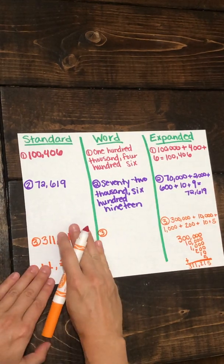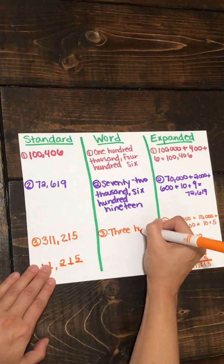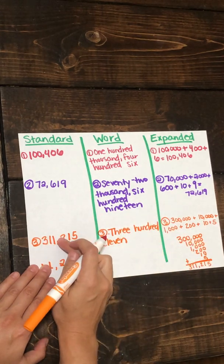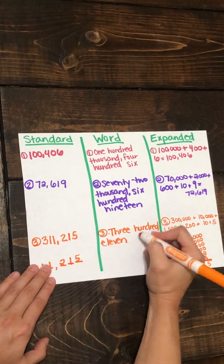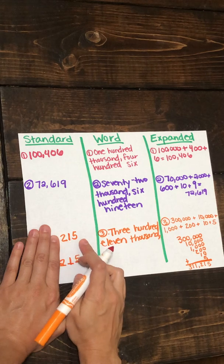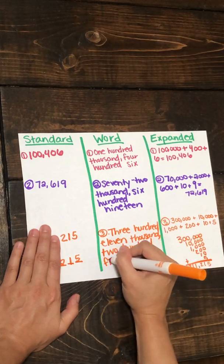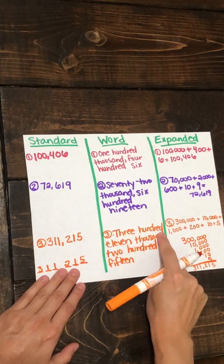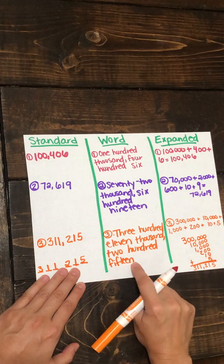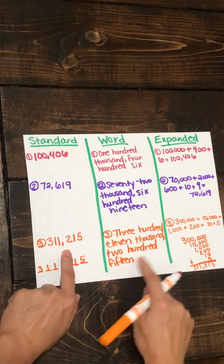Now to write that in word form, let's take our first group: 311. I know that this is in the thousands section, so it would be three hundred eleven thousand. Then I see 215, so I'll write two hundred fifteen. So we have 311,000 — represented as 300,000 + 10,000 + 1,000 — and 215 — represented as 200 + 10 + 5 — giving us three hundred eleven thousand two hundred fifteen.